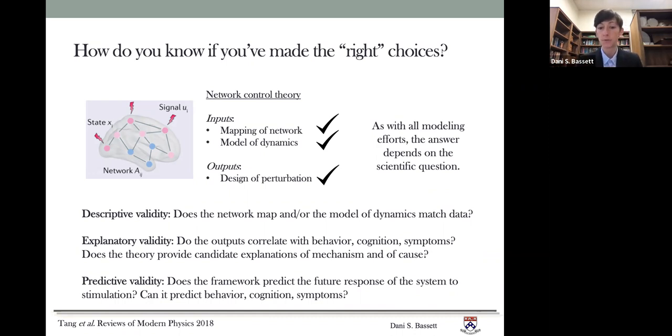The first is descriptive validity. Does the network map and or the model of dynamics match the data? If they do, then you have descriptive validity.